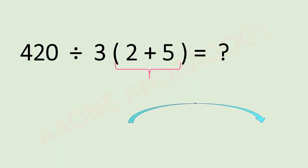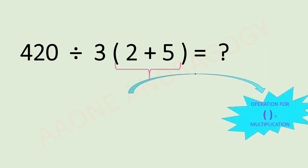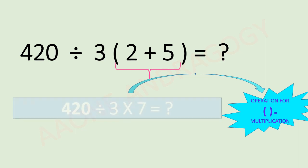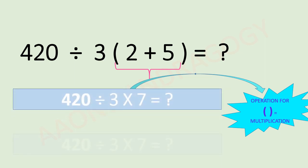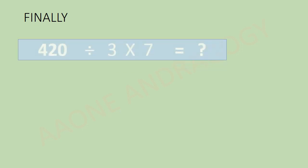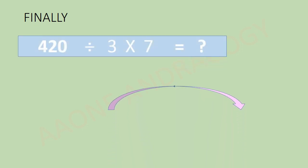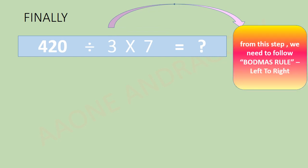The final sum. In this, let's try to solve within the bracket, that is 2 plus 5 is 7. So 420 divided by 3 into 7. Finally, this is the step from which we need to take the BODMAS rule.